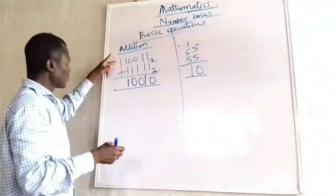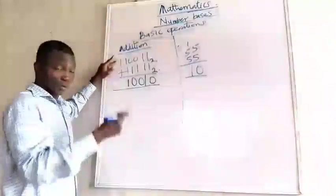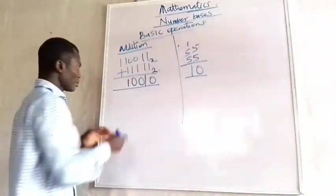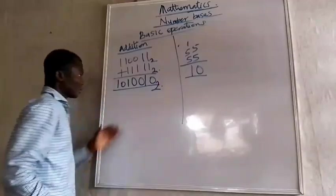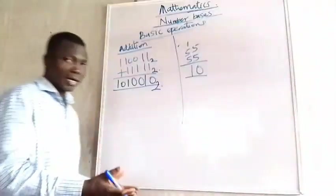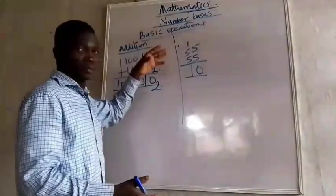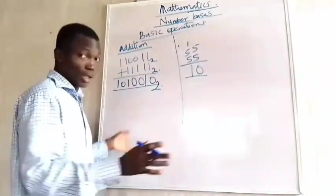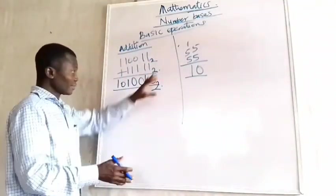Bringing the carried 1 here, 1 plus 1 gives 2, and that is 10 under base 2, so I have 0 and carry 1 to base 2. You can see the answer. Now, to confirm this, let's convert to base 10 — just to verify our answer.